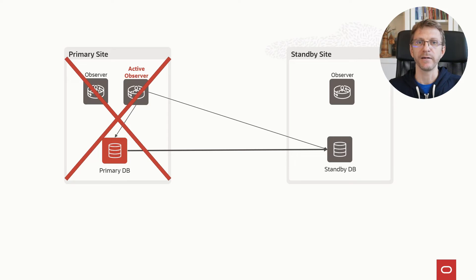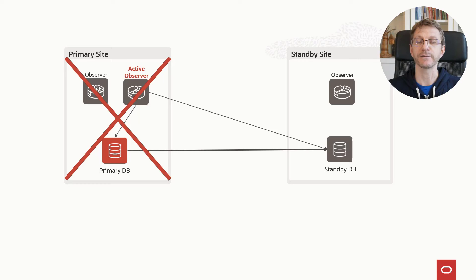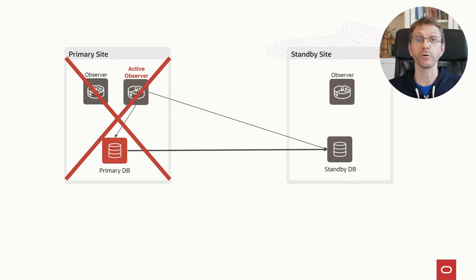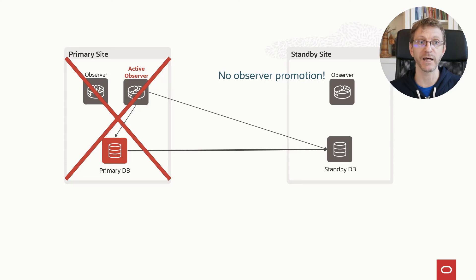It is still important to understand that if I have two observers on the primary site, or even just the active observer on the primary site, I still have the problem of losing the full primary site. I lose the primary database and the active observer. Therefore, the surviving observer on the standby site has no connectivity with either the observer or the primary site. The surviving observer cannot unilaterally become the active observer and start a failover, because that would expose the configuration to a split-brain risk. We will never promote a surviving observer to active observer without having access to the primary.